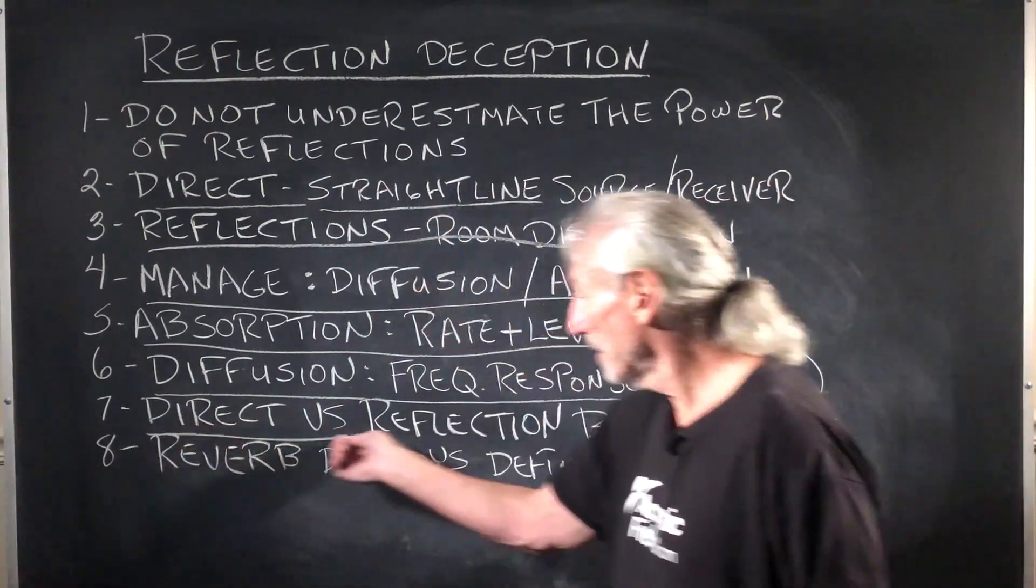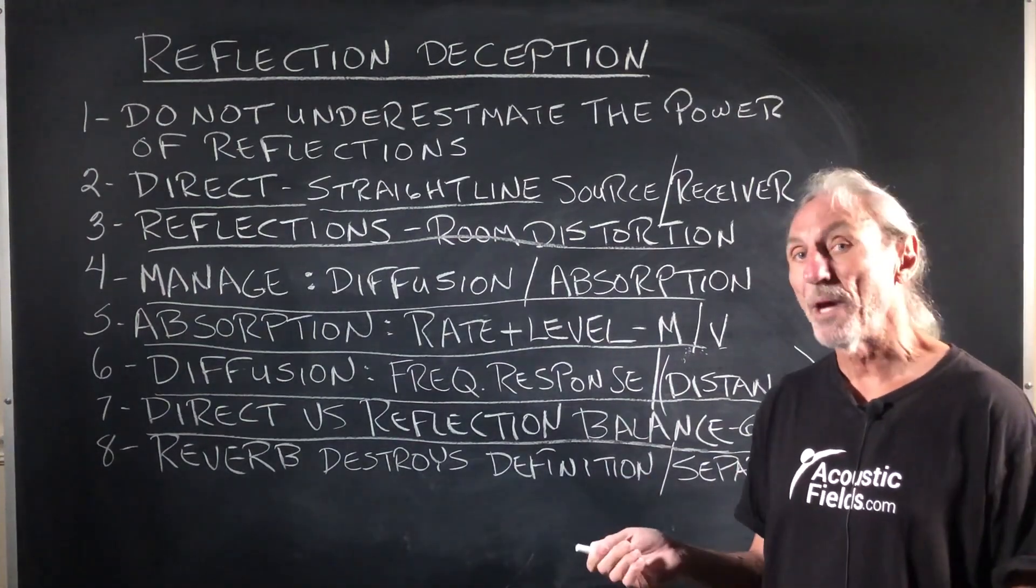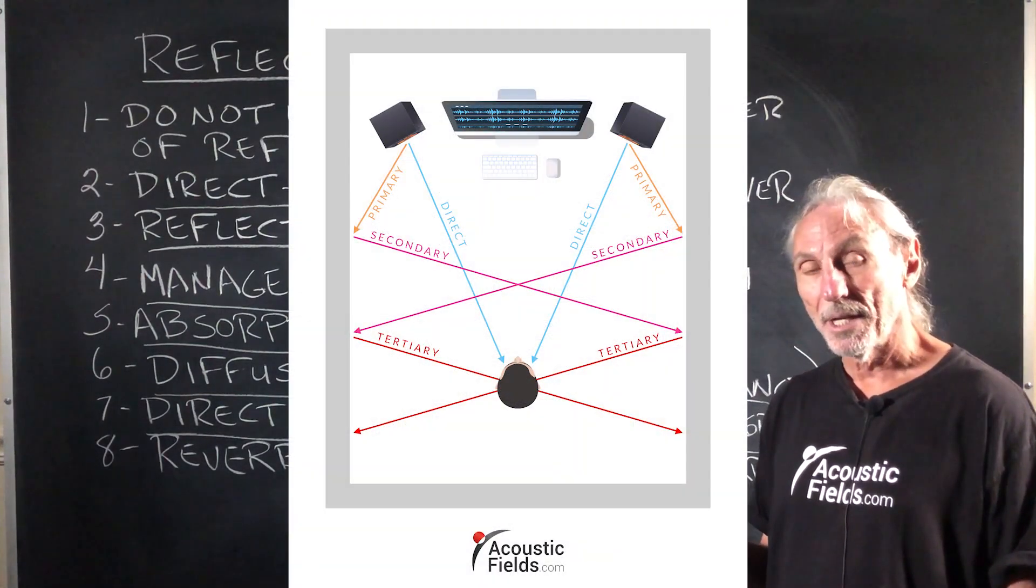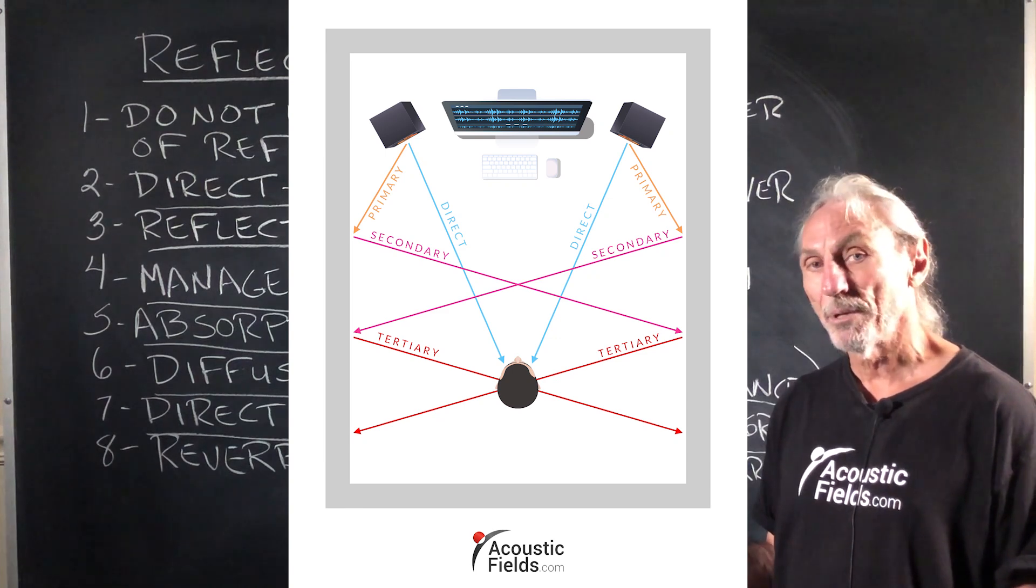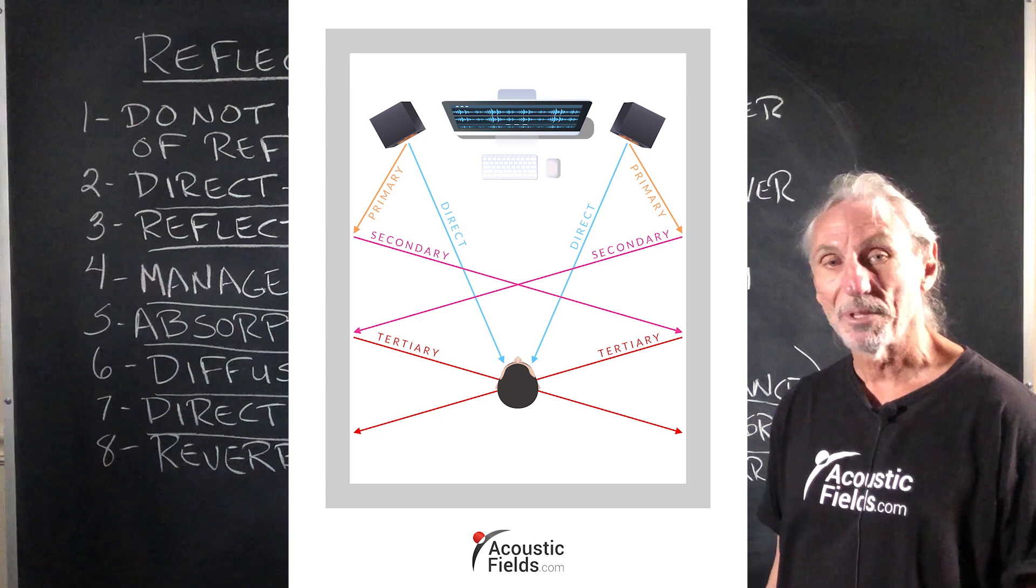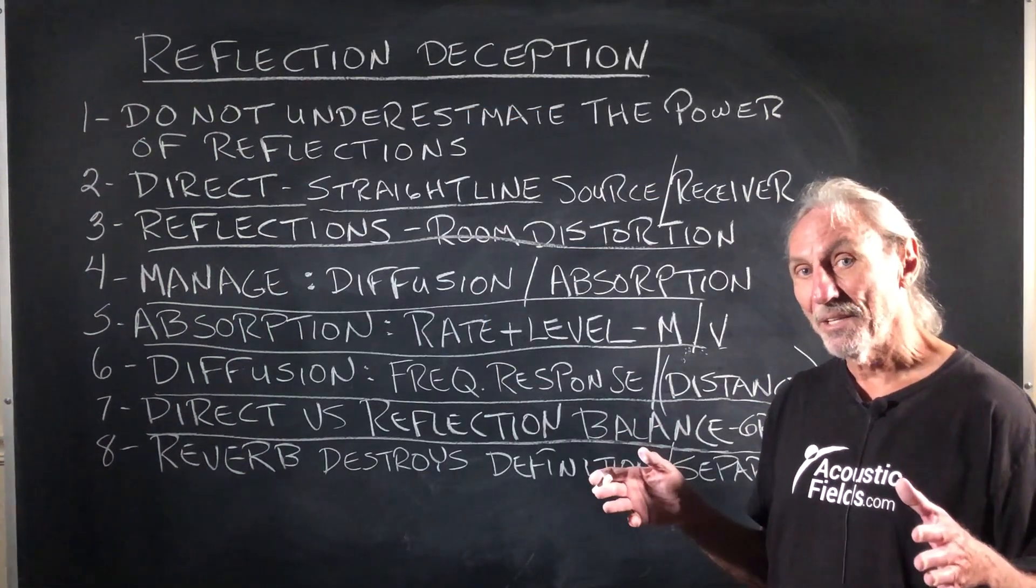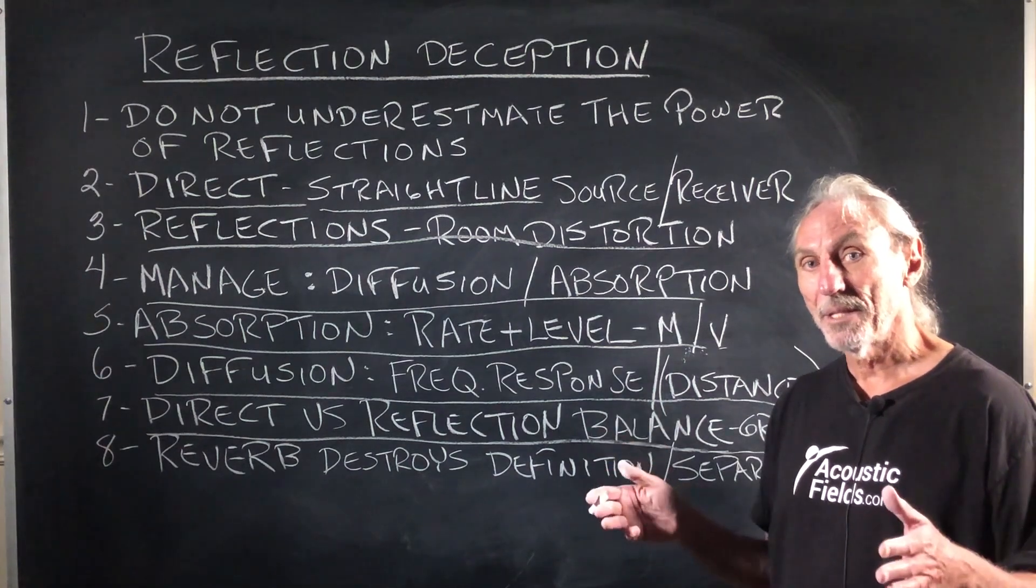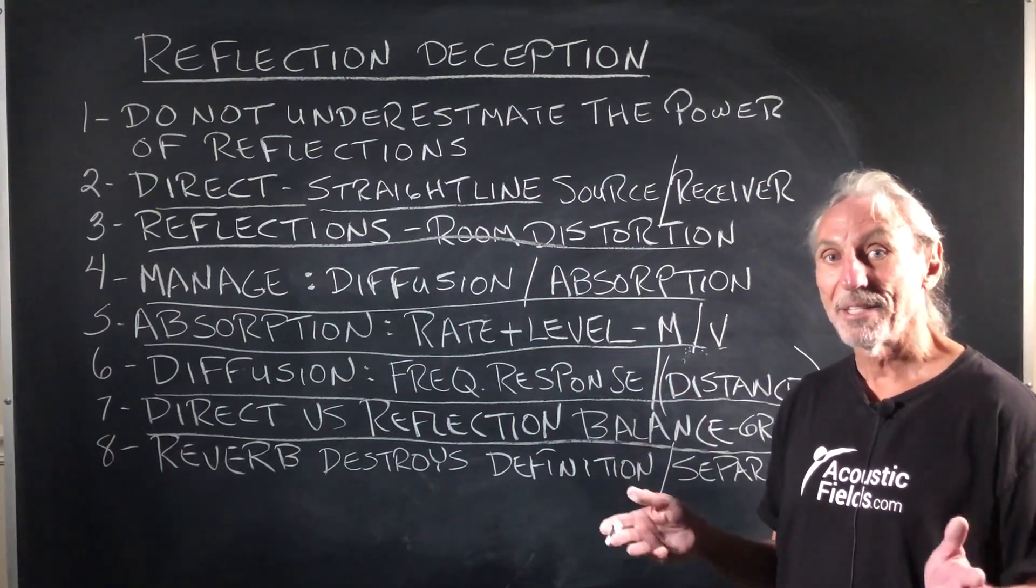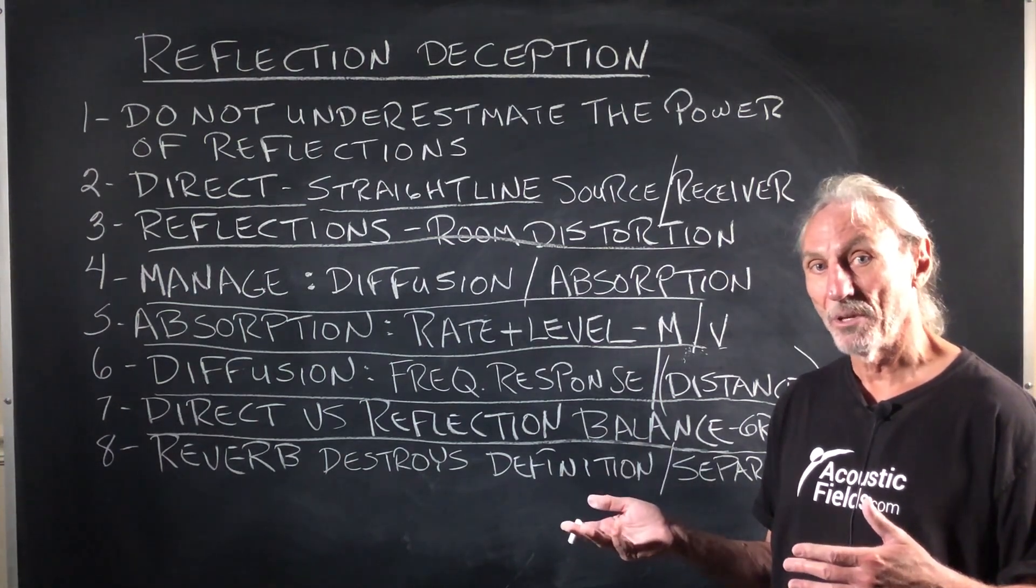Our goal is to direct versus this reflection balance. And you can see in this graphic we have primary, secondary and tertiary in a two-channel rig setup. There's many more, especially I'm finding with theater and multiple channels. We can kind of take in theater the primary, secondary and tertiary reflections and add that to every channel.